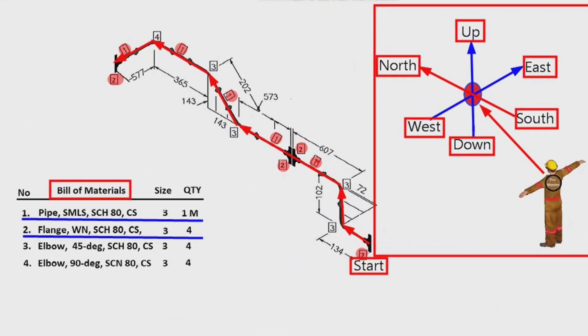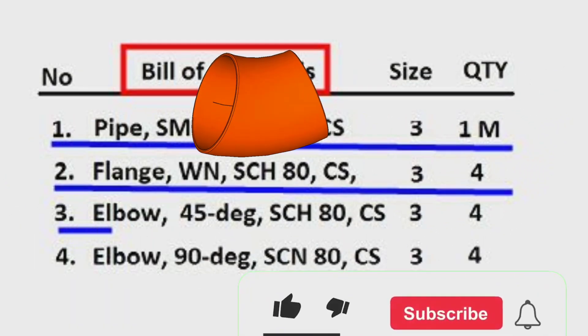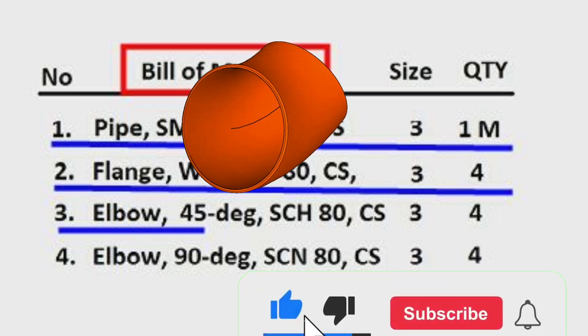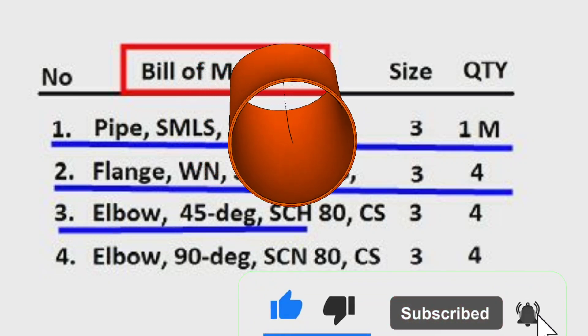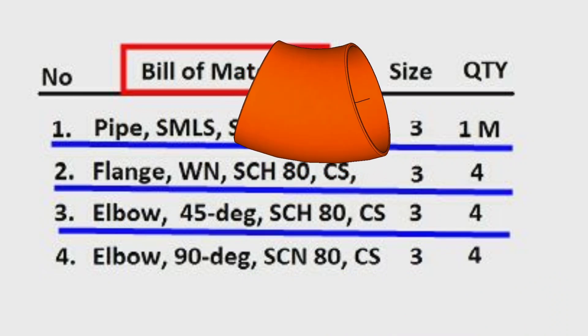Let's look at the material here. Detail number three was used 4 places in the pipe isometric. Let's look at the material list. The detail number three, elbow 45 degree type, wall thickness schedule 80, carbon steel material, size is 3 inches, the quantity is total 4 pieces.